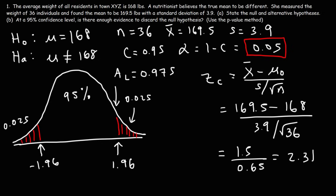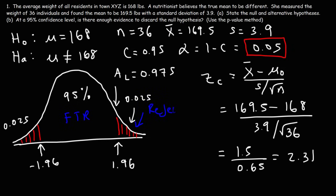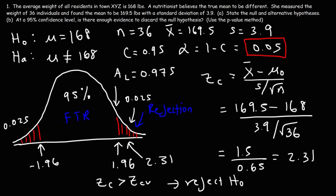We need to see where our calculated z-value of 2.31 falls. The unshaded region is the fail-to-reject region, and the red shaded areas are the rejection regions. Since 2.31 is greater than the critical value of 1.96, it falls in the rejection region. Therefore, we reject the null hypothesis. That's the traditional method.